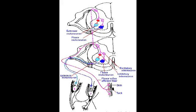These are nociceptive afferent fibres which detect a painful stimulus. In this diagram we see a tack entering the skin, and this painful stimulus surpasses a threshold which creates an action potential that is fired down our flexor reflex afferent fibre — our nociceptive fibre — and travels towards our central nervous system.